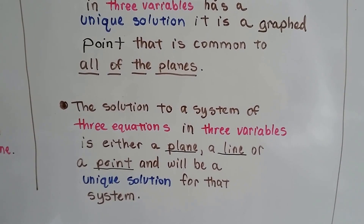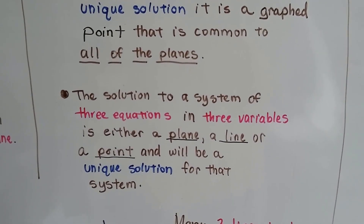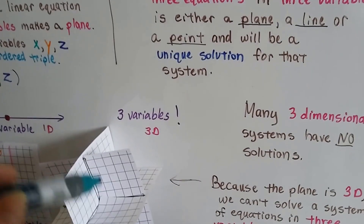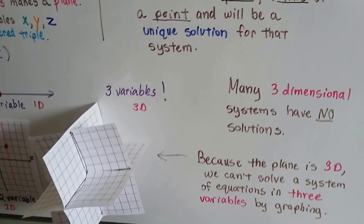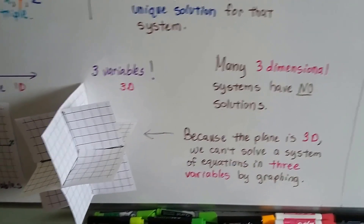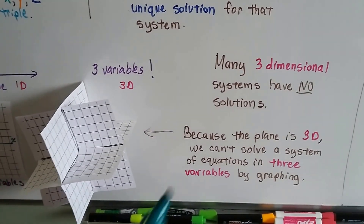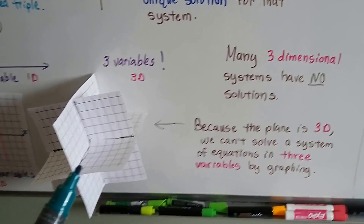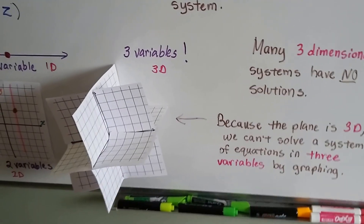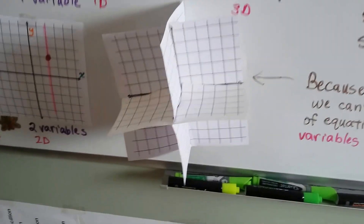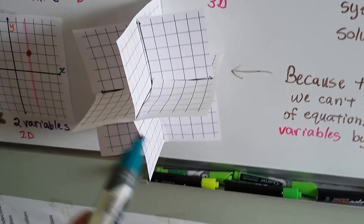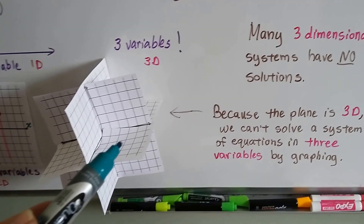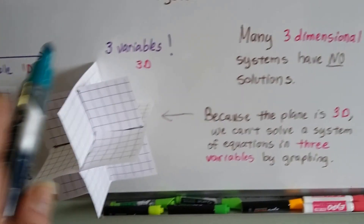The solution to a system of three equations and three variables is either a plane, a line, or a point that will be a unique solution on this 3D plane. Many three-dimensional systems have no solution, and because the plane is 3D, we can't solve a system of equations in three variables by graphing. That was really rough to make, and you can see there are some curves and the paper didn't quite go together right.